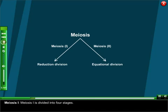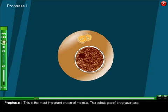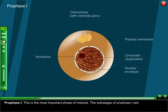Meiosis one is divided into four stages. Prophase one is the most important phase of meiosis. The substages of prophase one are: